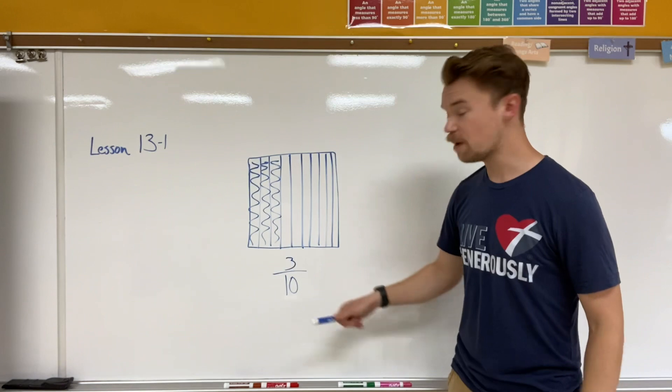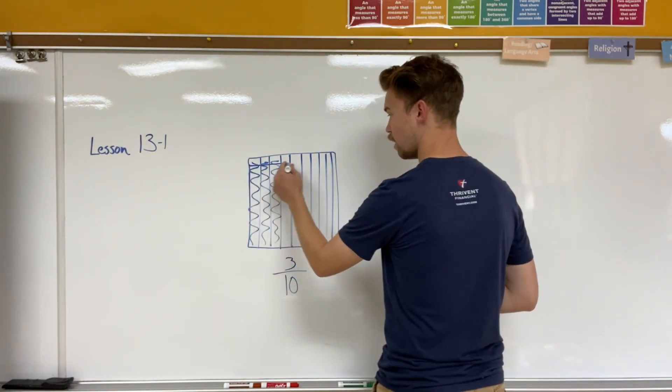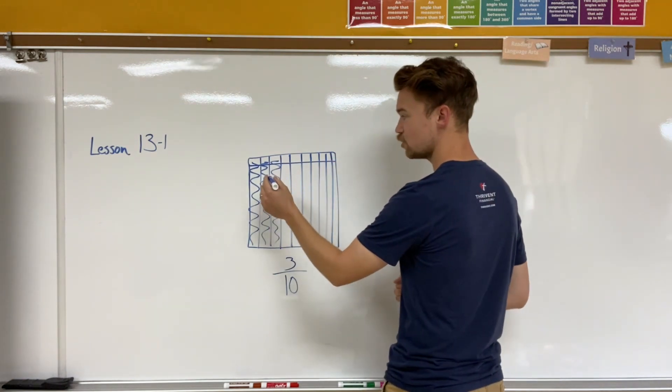So right now I have three tenths, but just like in previous chapters, what if I divide up my tenths into something higher?